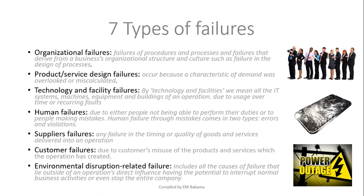Environmental disruption failure covers all failures that are external to the company. For example, you go to the university for registration and they tell you there are power outages — no electricity — which is something out of the university's control. These are the types of failures you need to know.